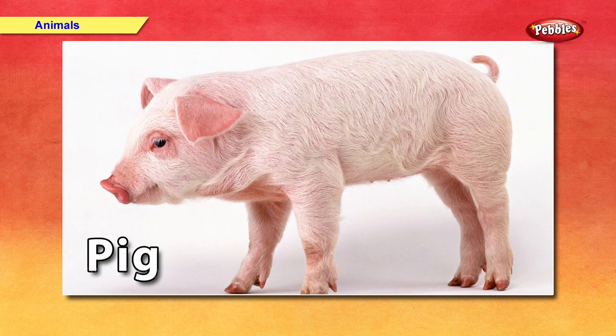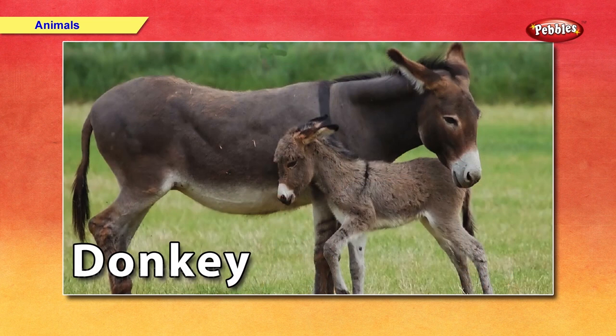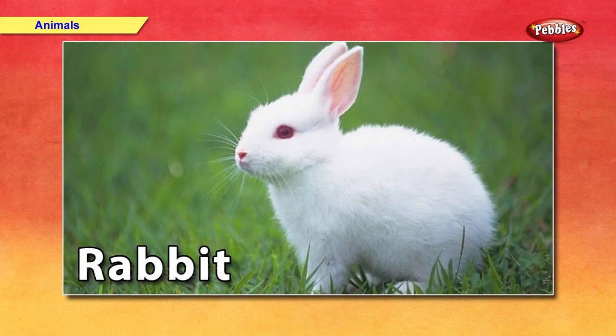Pig. Donkey — a donkey helps us by carrying a lot of load on his back. Rabbit — a rabbit is a very beautiful animal. It eats carrots, leaves and grass. A rabbit can run very fast.